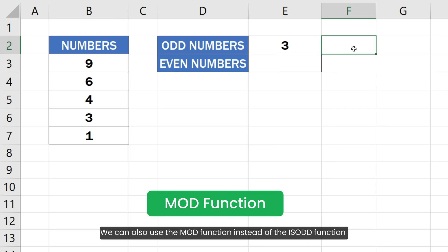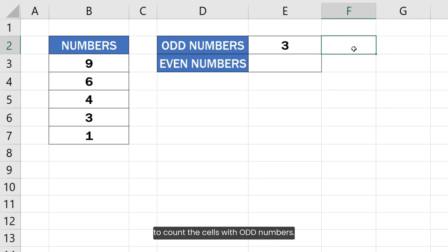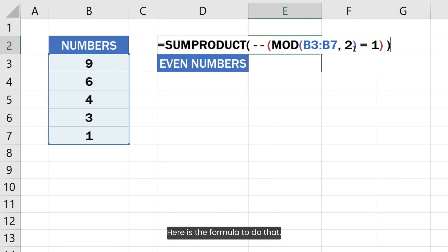We can also use the MOD function instead of the ISODD function to count the cells with odd numbers. Here is the formula to do that.